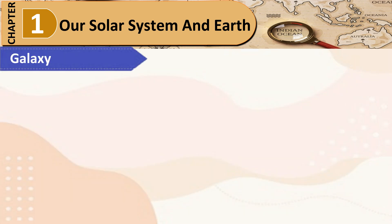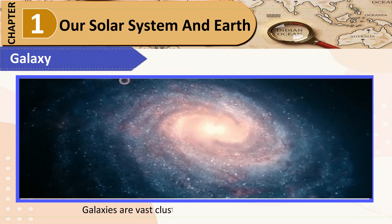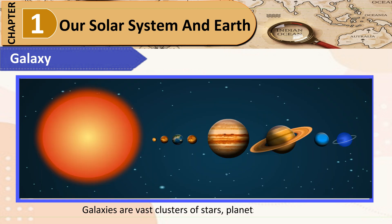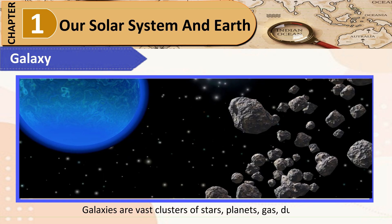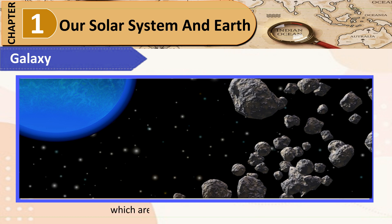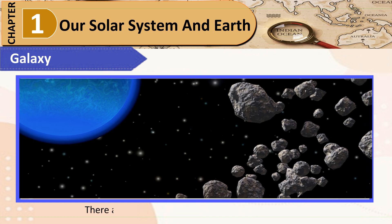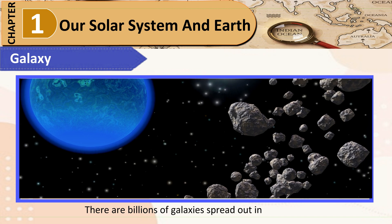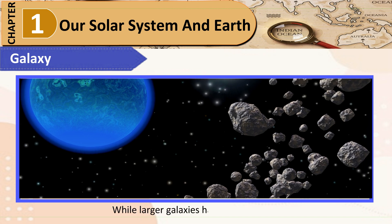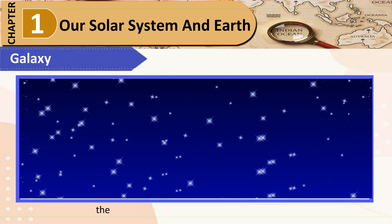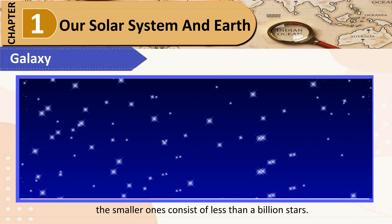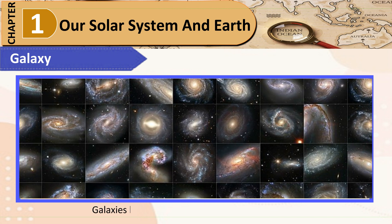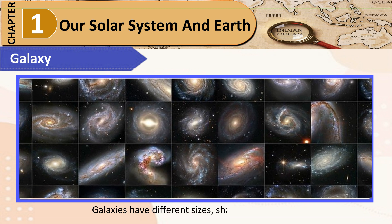Galaxies are vast clusters of stars, planets, gas, dust, etc., which are held together in space by gravity. There are billions of galaxies spread out in the universe. While larger galaxies have trillions of stars, the smaller ones consist of less than a billion stars. Galaxies have different sizes, shapes, and brightness.